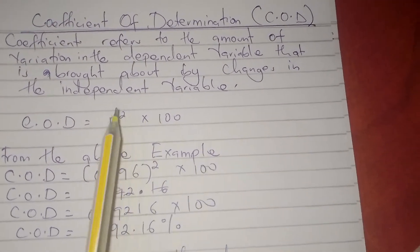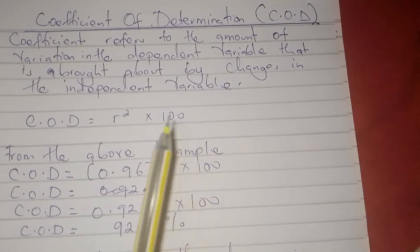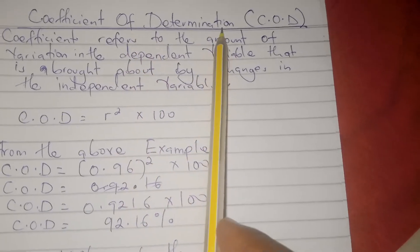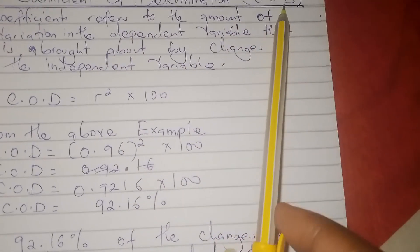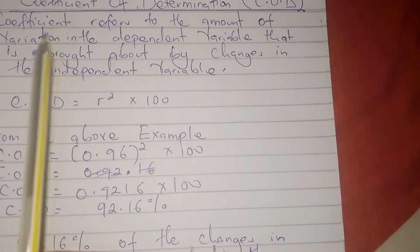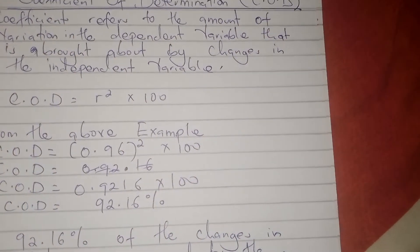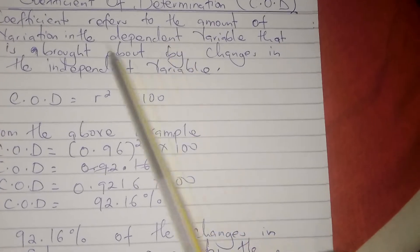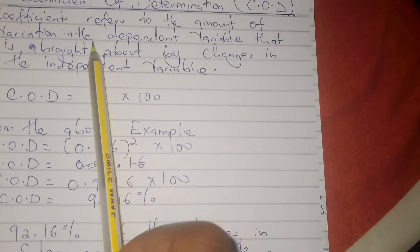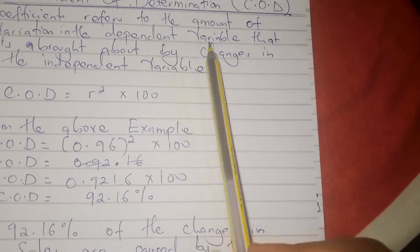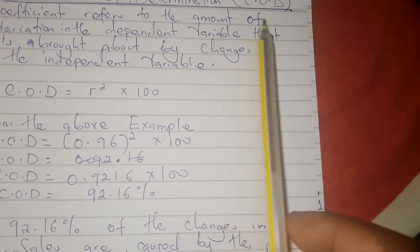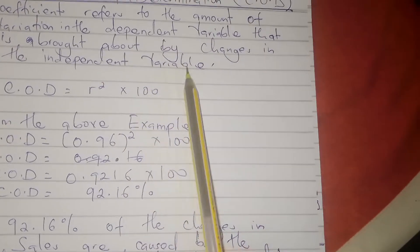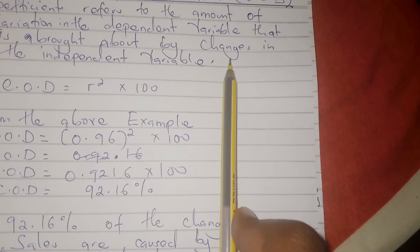In correlation, there is also what we call the Coefficient of Determination, which is COD. The coefficient of determination refers to the amount of variation in the dependent variable that is brought about by changes in the independent variable.